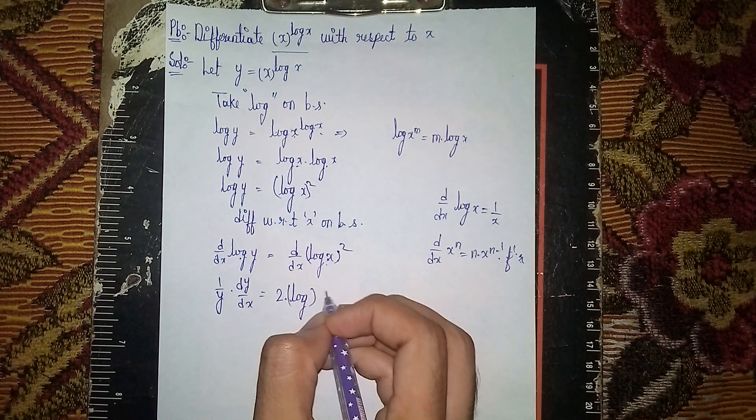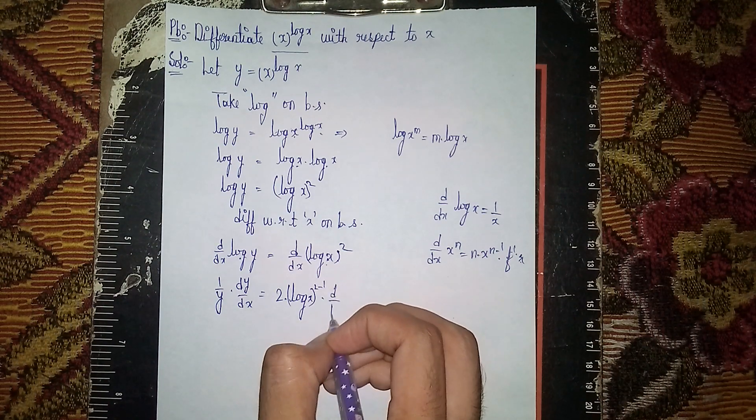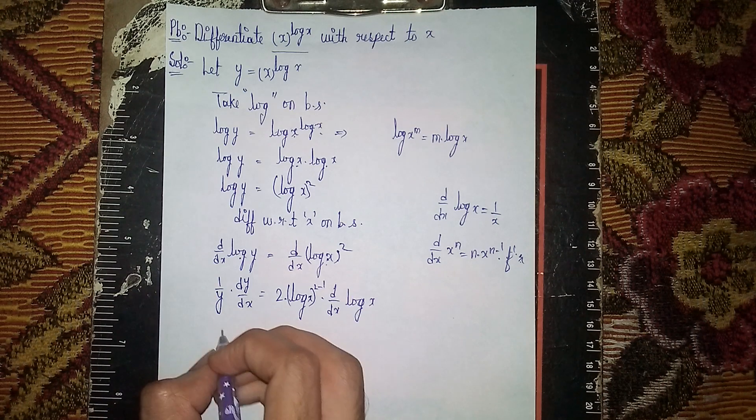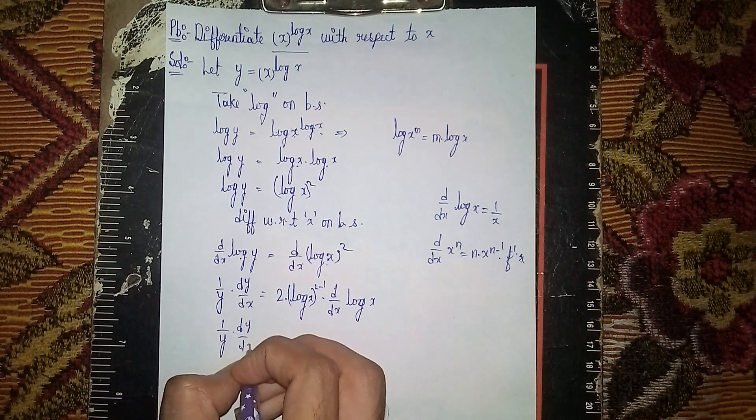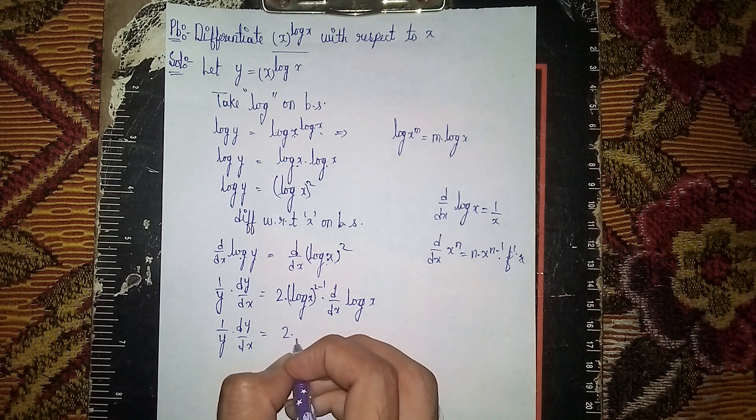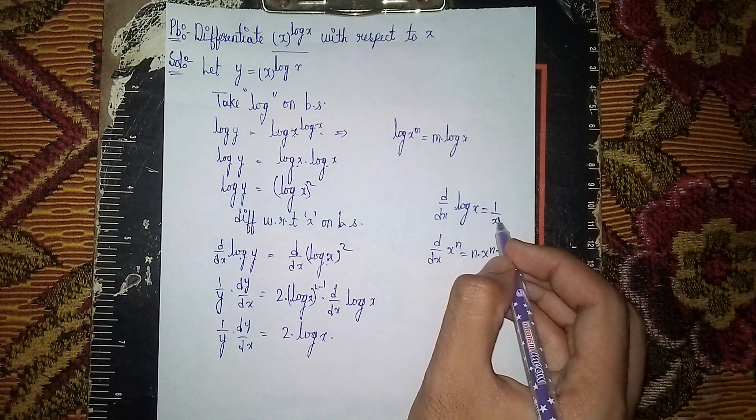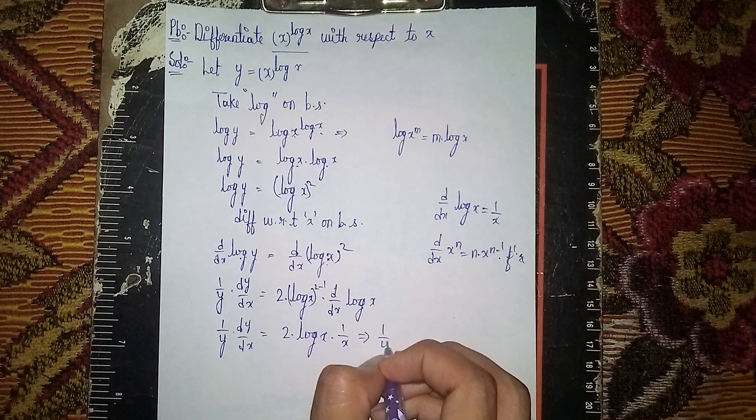So we have (1/y) times dy/dx = 2 log x times d/dx of log x. Since d/dx of log x = 1/x, this becomes (1/y) times dy/dx = 2 log x / x.